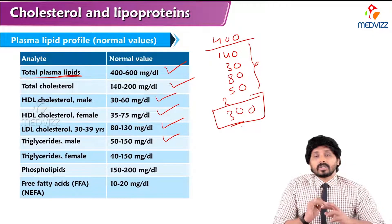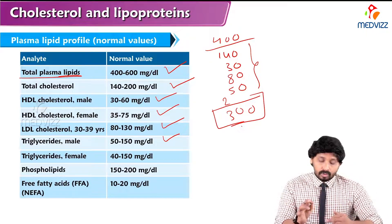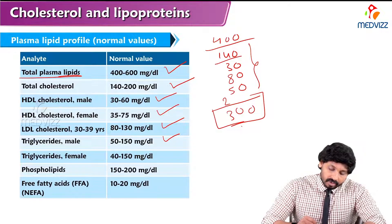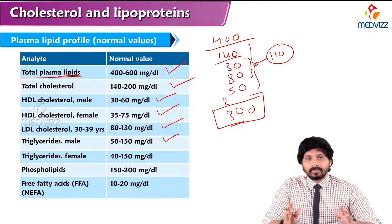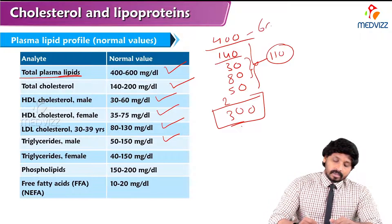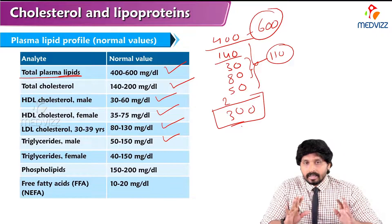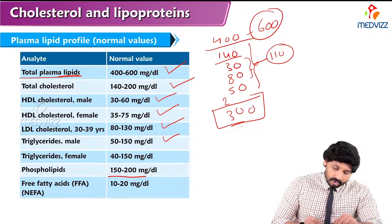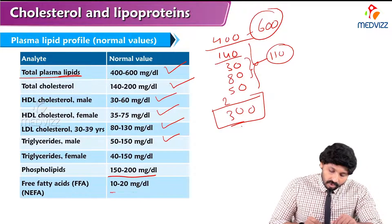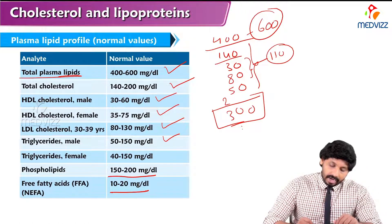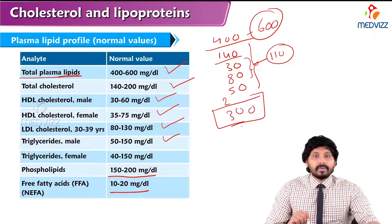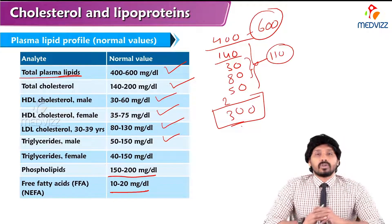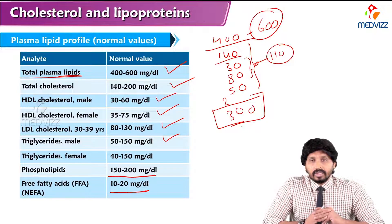Total cholesterol is a combination of LDL plus HDL cholesterol, giving a range around 110 mg/dL as a minimum, with the normal total lipid range being 400 to 600 mg/dL. Phospholipids are 150 to 100 mg/dL and free fatty acids are 10 to 20 mg/dL. Adding phospholipids and free fatty acids contributes to the total lipid value. That concludes the regulation of cholesterol synthesis and lipid values in circulation.